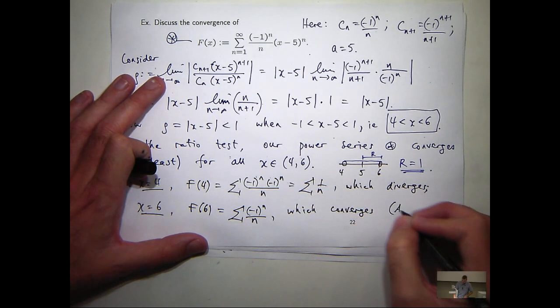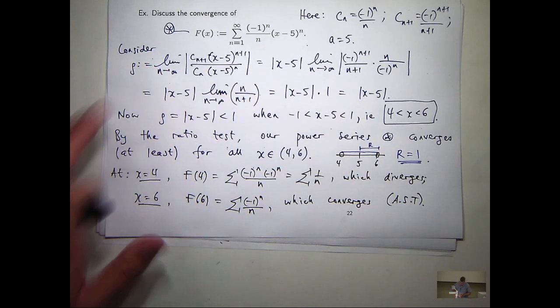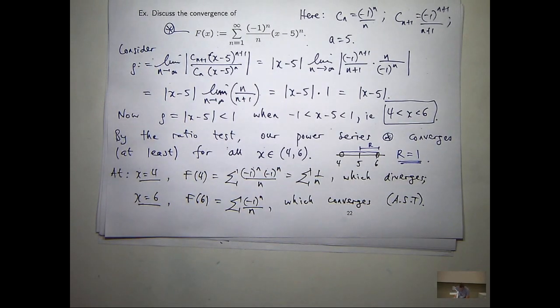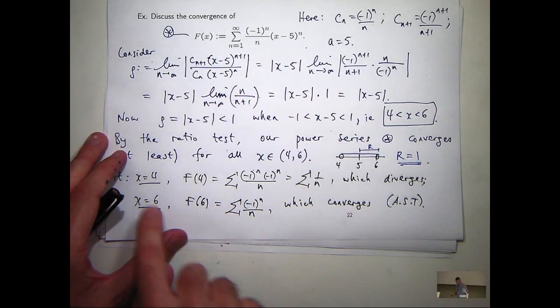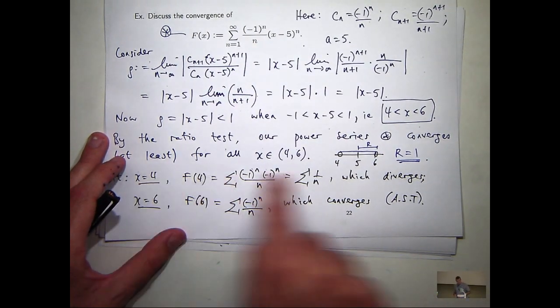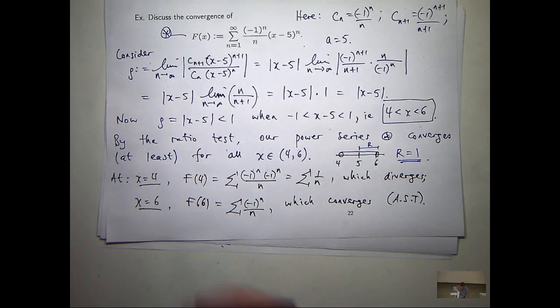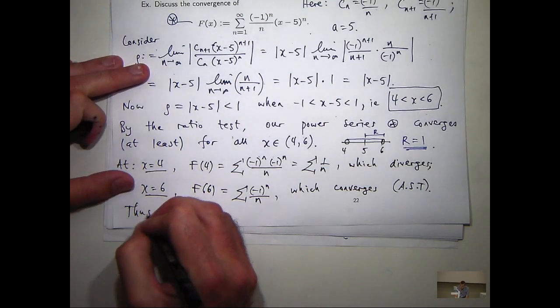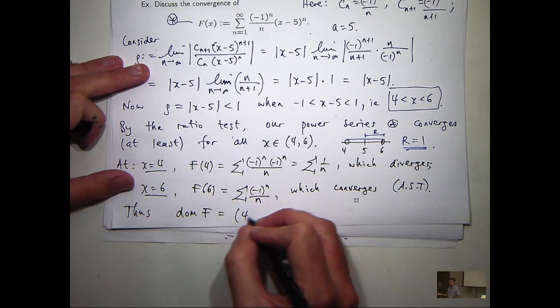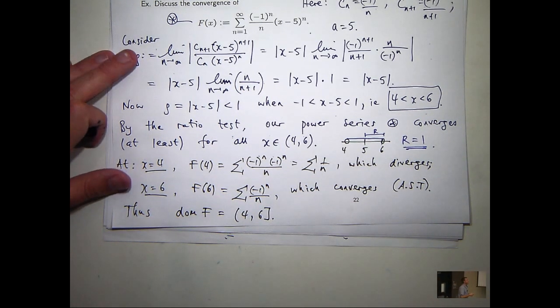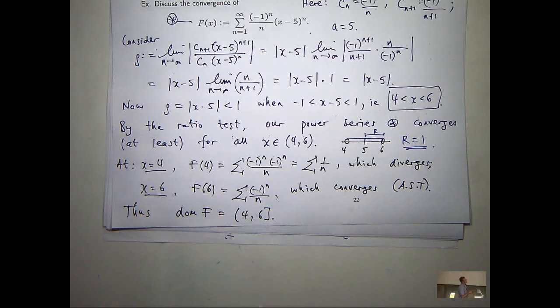Or A-S-T. I won't put in all the details. So, what does it mean? It means these points are in the domain and this point, but not this point because this series diverges. So, you have a bit of a weird situation where one of the endpoints is in the interval, the other one's not.